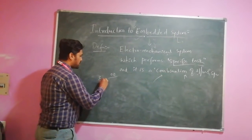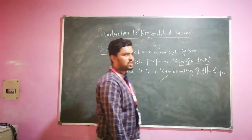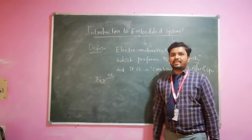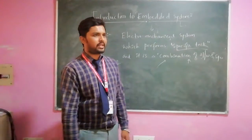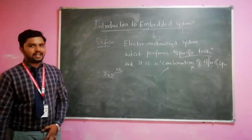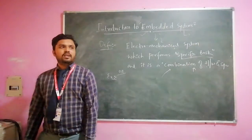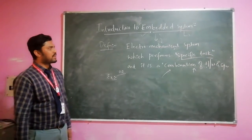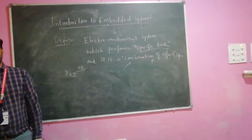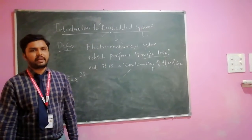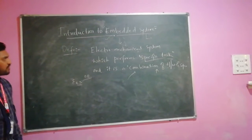For example, coming to home appliances we have a washing machine, air conditioner, and coffee brewing system. Coming to healthcare we have ECG and EEG. For industrial automation we have robotics, and for retail and banking we have the automatic teller machine. For communication we have network routers. Nowadays we also use smart TVs, which are examples of embedded IoT applications.